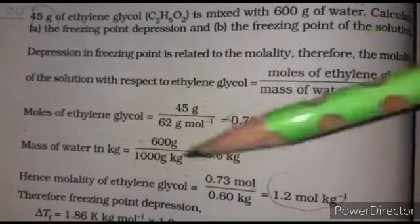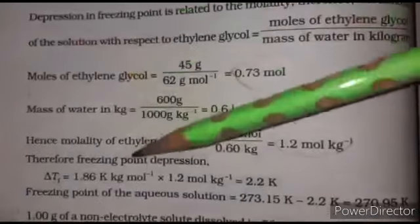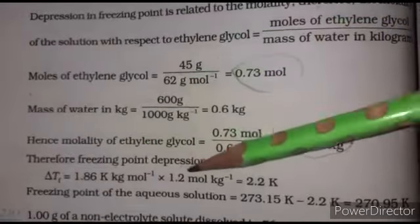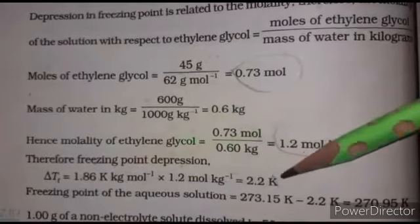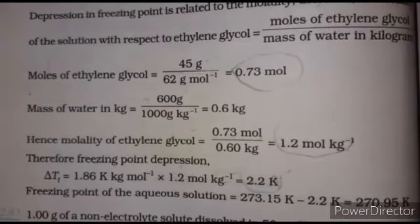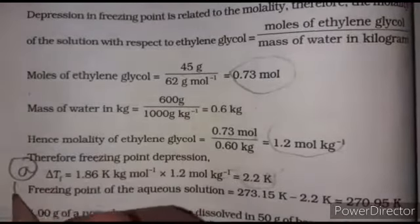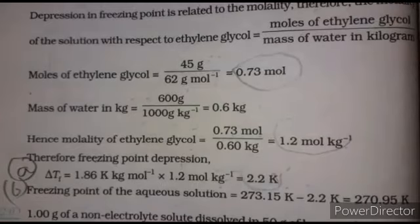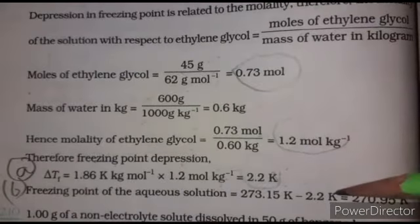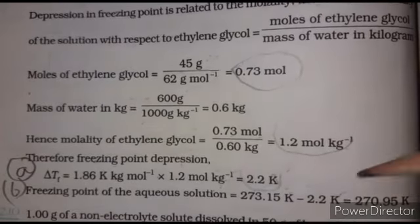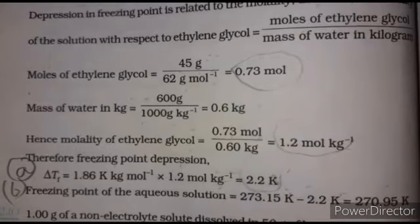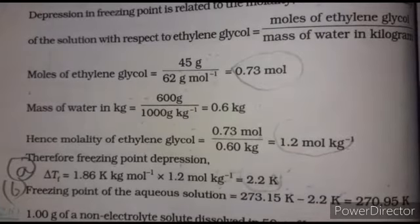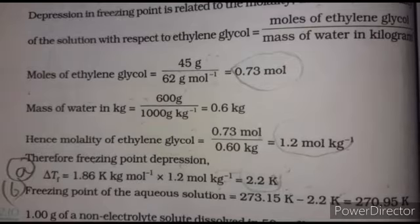Freezing point depression: delta Tf = Kf × m = 1.86 × 1.2 = 2.2 K. For part (b), the freezing point of the aqueous solution = Tf° − delta Tf = 273.15 − 2.2 = 270.95 K. So the freezing temperature of the solution is 270.95 K.